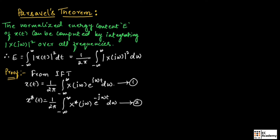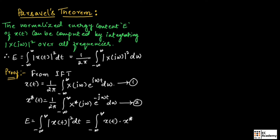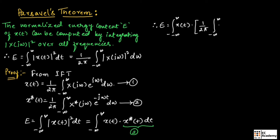Now we know energy can be written as the integration from minus infinity to infinity of the magnitude of X(t) whole square dt. This can be written as the integration from minus infinity to infinity of X(t) multiplied with the complex conjugate of X(t) dt. Here, let us substitute equation number 2. Therefore, we can write E equal to the integration from minus infinity to infinity of X(t) into 1 by 2π times the integration from minus infinity to infinity of X*(jω) exponential to the power of minus jωt dω dt.